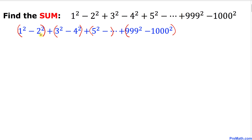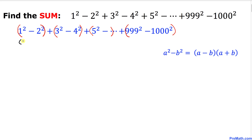We see the difference of two squares, and we are going to apply the well-known formula: a² − b² = (a − b)(a + b). In other words, the difference of two squares is always equal to the product of their difference and their sum. So we can write the first group as (1 − 2)(1 + 2).